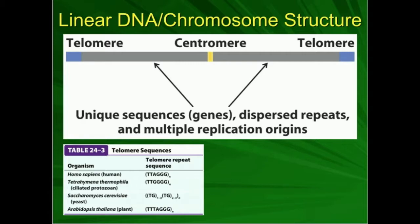If a gene was in the Q arm, you would refer to that gene as Q and then some numerical designation. If the gene was in the P arm, then you refer to that gene's location as P and then some numerical designation. Looking at the telomeres on either end, here are some telomere repeat sequences. In Homo sapiens, we have a telomere repeat sequence of TTAGGG, and that repeats some n number of times. Other organisms — depending on the kingdom, such as plants, yeast, and protozoans — can have variations of that.